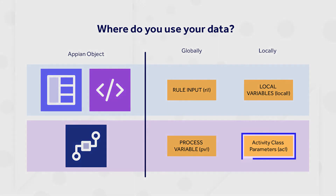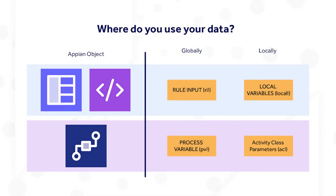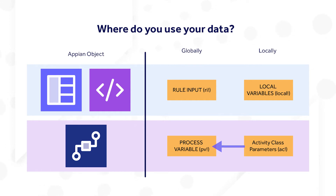Within a process model, process nodes have inputs and outputs — sometimes called activity class parameters — that are available for use within that specific node. Activity class parameters are like local variables for process nodes. To use these values elsewhere in the process, they must be saved to a process variable.